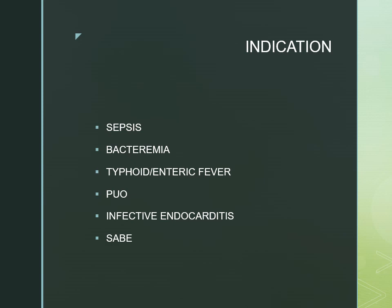The indications for blood culture include sepsis and bacteremia. What is the difference between sepsis and bacteremia? Both involve bacteria present in the blood, but bacteremia is merely the presence of bacteria in the blood, while sepsis means there is a manifestation — the person is having symptoms.